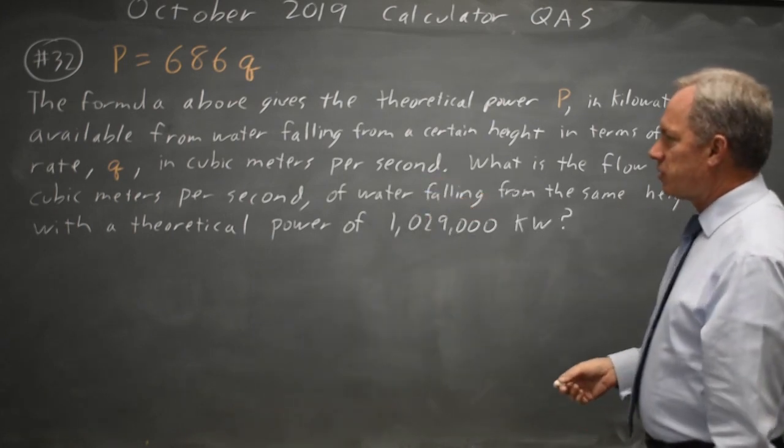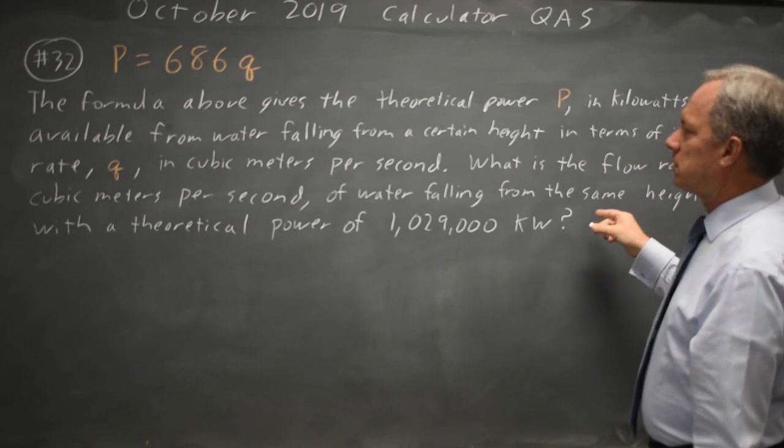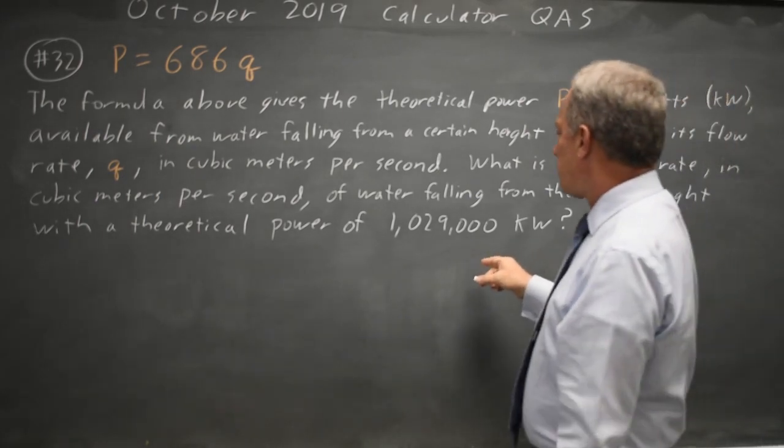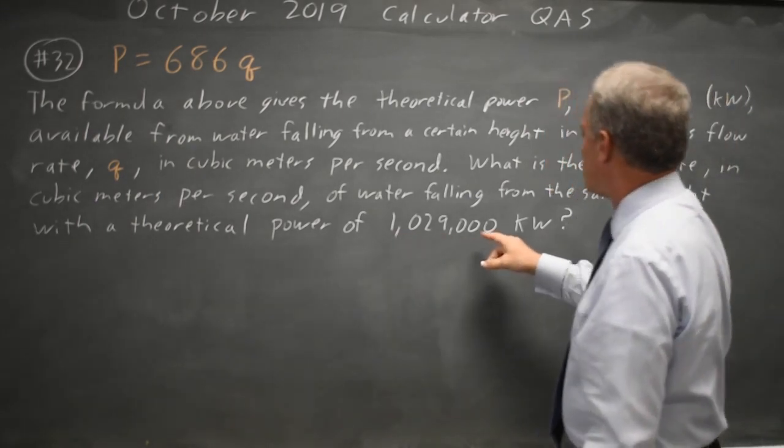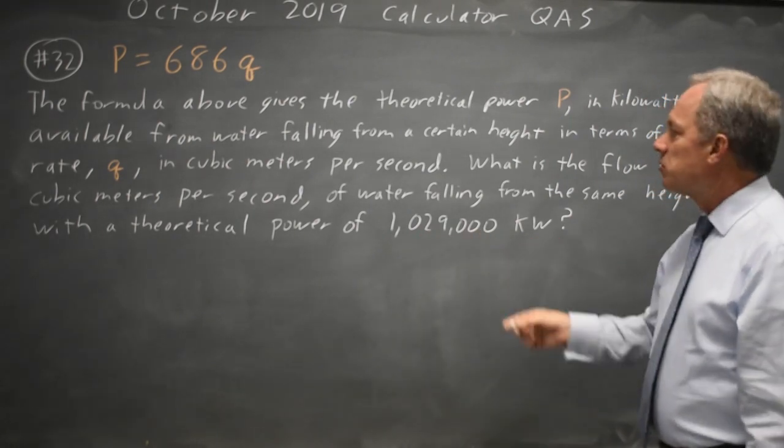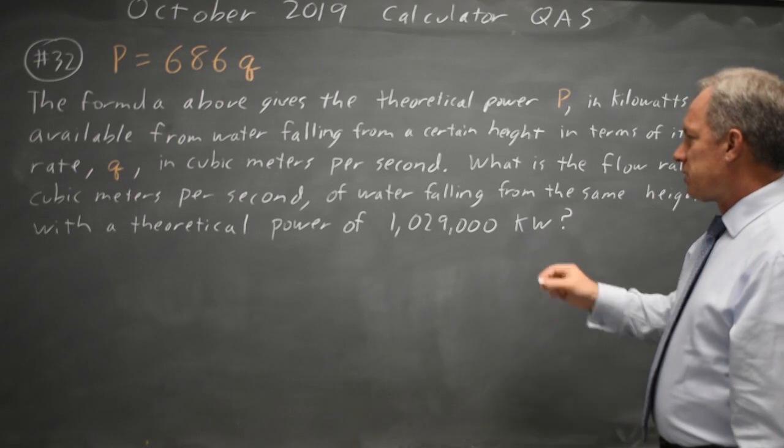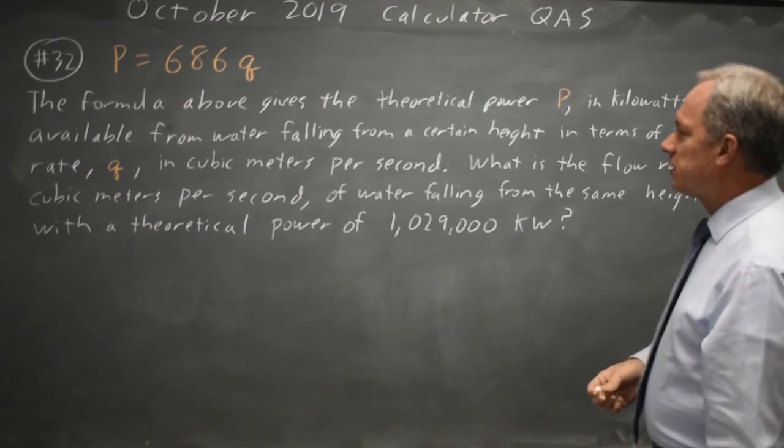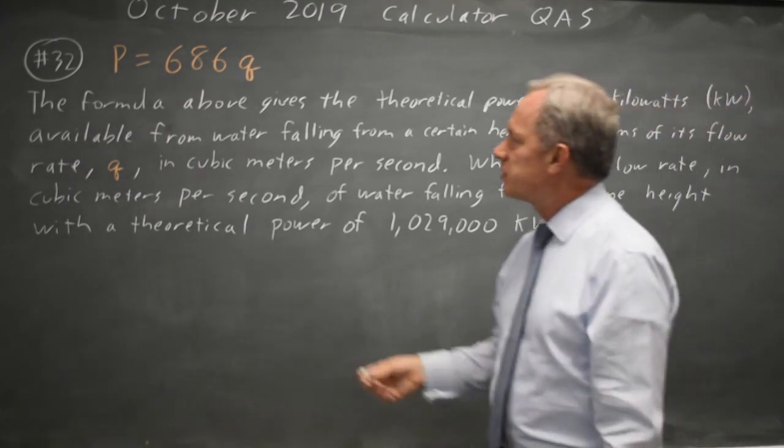They ask us for the flow rate given a power of 1,029,000 kilowatts. So we're working in kilowatts and they want a flow rate in cubic meters per second. Both sets of units match the formula.